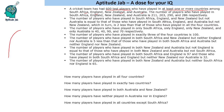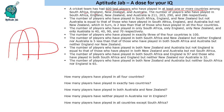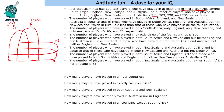Let us first draw the Venn diagram. A 4-set Venn diagram is drawn like this. This is South Africa, England, New Zealand and Australia. Now this gives the numbers as well. So let us put these numbers — the totals are 211, 203, 290 and 286.